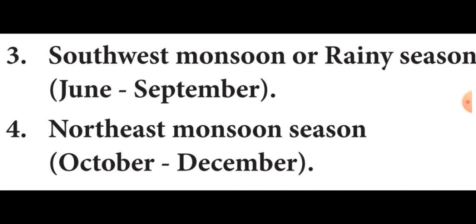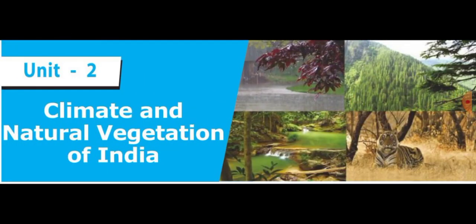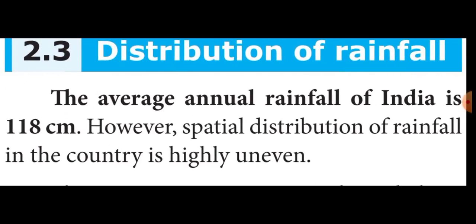The next topic is distribution of rainfall. The average annual rainfall of India is 118 centimeters. However, the spatial distribution of rainfall in the country is highly uneven. The western coast, Assam, South Meghalaya, Tripura, Nagaland, and Arunachal Pradesh are the heavy rainfall areas, which get more than 200 centimeters of rainfall.